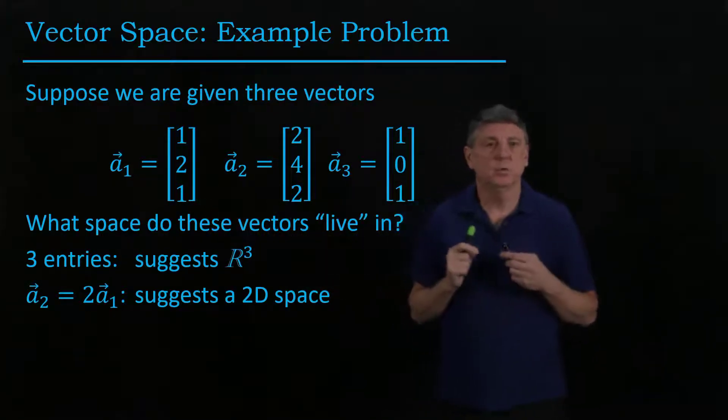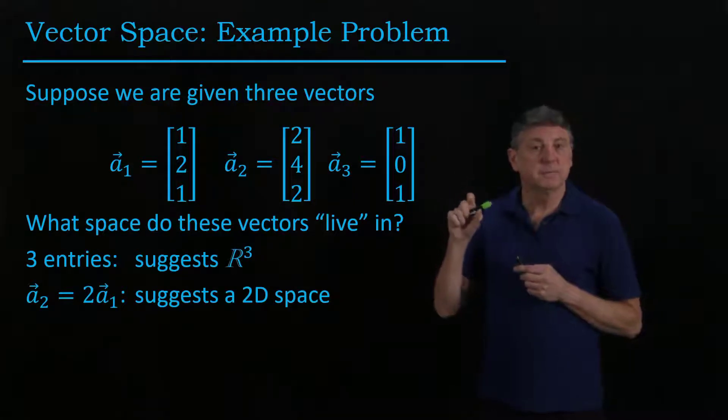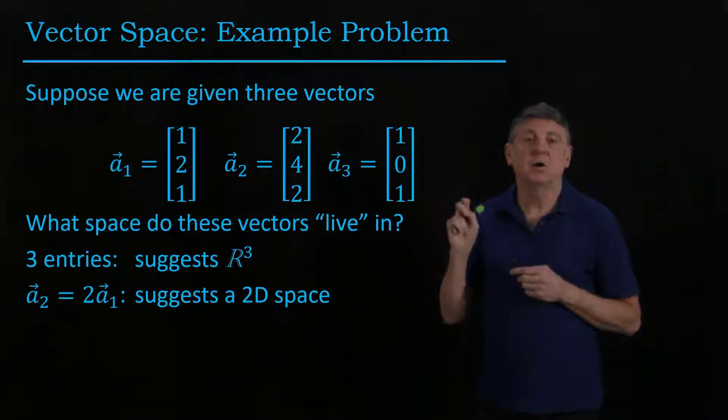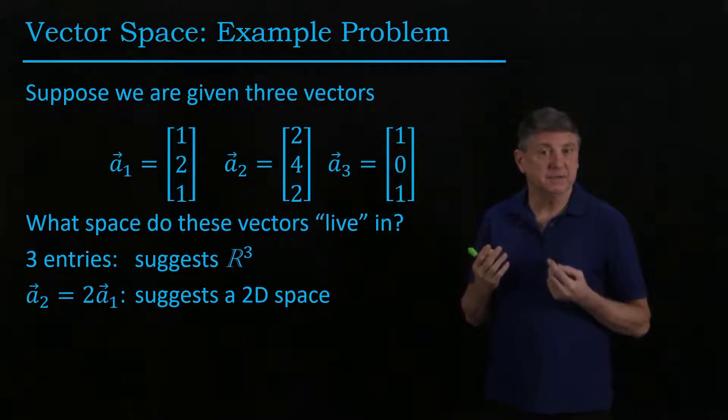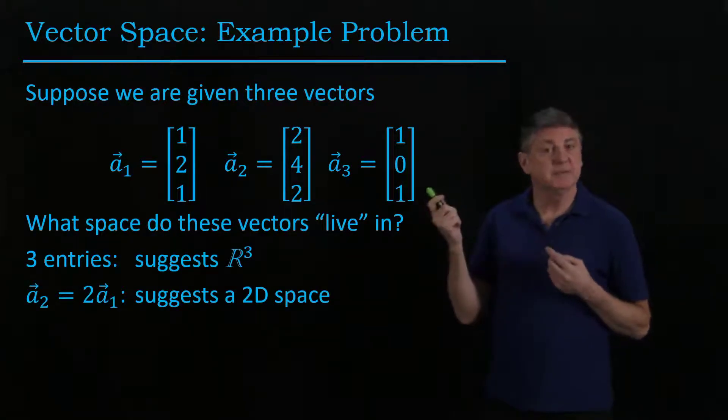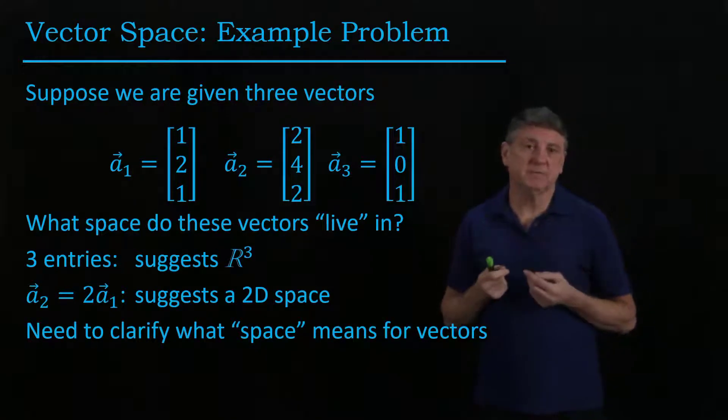If we observe that this vector is a simple multiple of this vector, we might say, well, no, we're going to say that two vectors which differ only by a scale factor are, in some sense, the same vector. And if we use that kind of reasoning, we would say that these live in a 2D space. So what this means is we need to clarify for ourselves what we mean by a space of vectors.